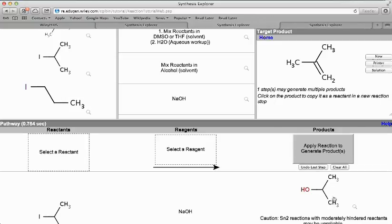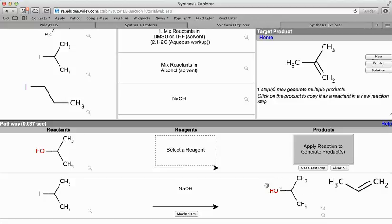If you have to do multiple steps, you can just click the product of the last step and that will become the reactant of the first step.